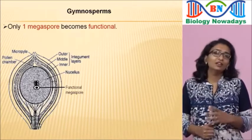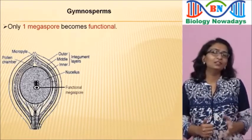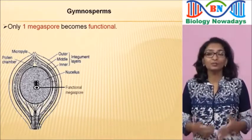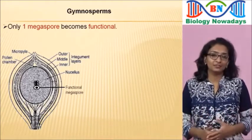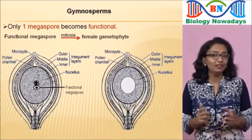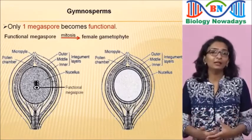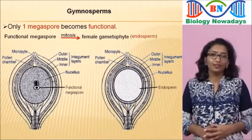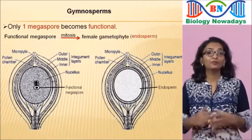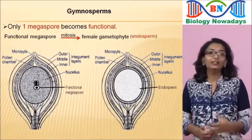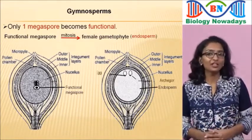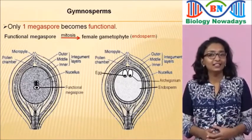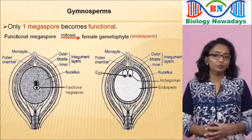After a long period of time — nearly one year — the functional megaspore undergoes mitosis to form a female gametophyte, also called the endosperm. The female gametophyte will produce female gametes or eggs in the female sex organs called archegonia. Archegonia are seen at the micropylar end of the ovule.